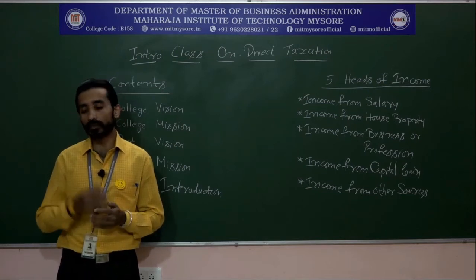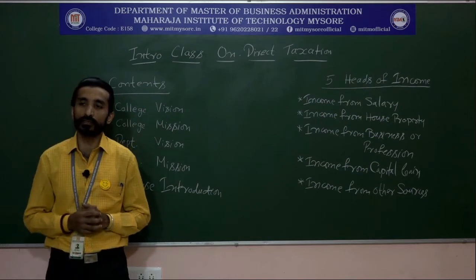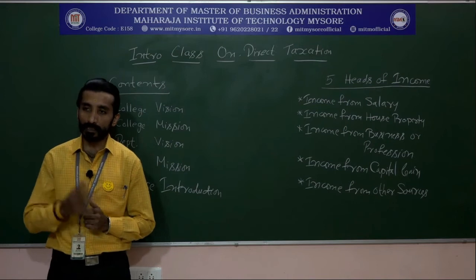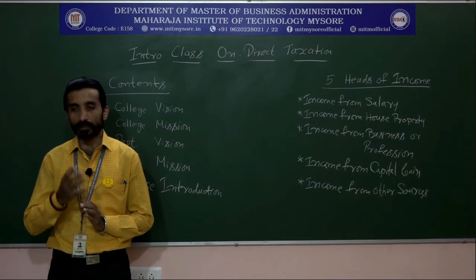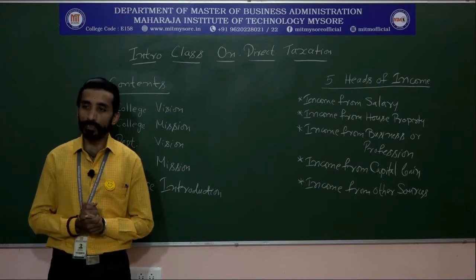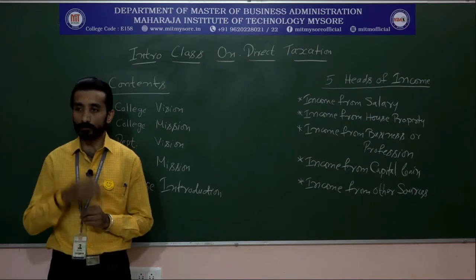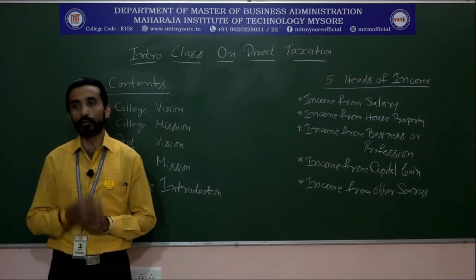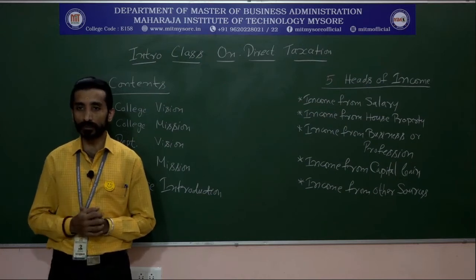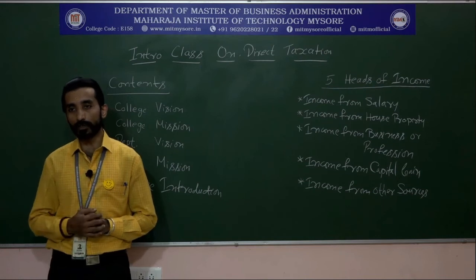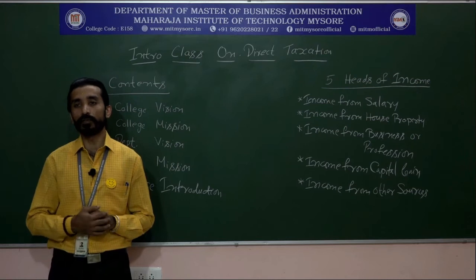Moving on to taxation in India: the Indian tax structure is divided into direct taxes and indirect taxes. Direct taxes are levied on taxable income earned by individuals or corporate entities — a burden on the individual who pays without a direct benefit. The authority monitoring direct taxes is CBDT, that is the Central Board of Direct Taxes.